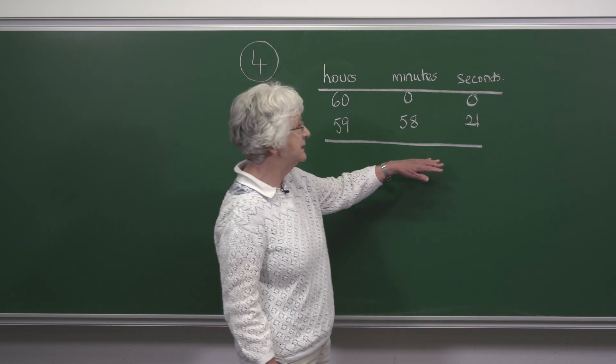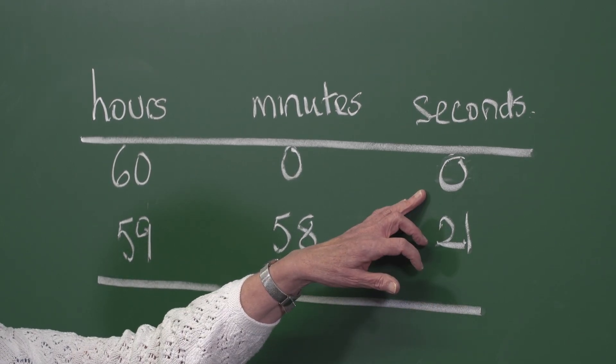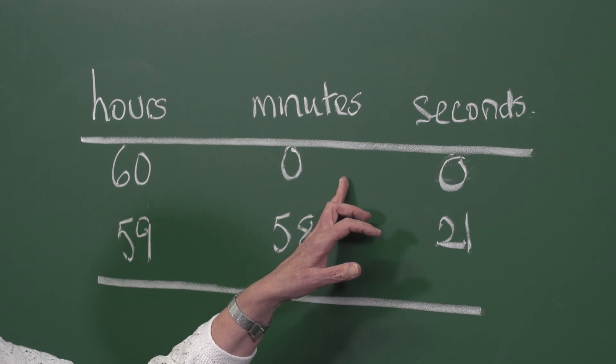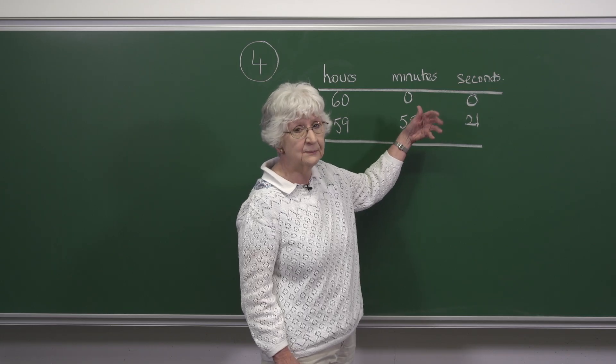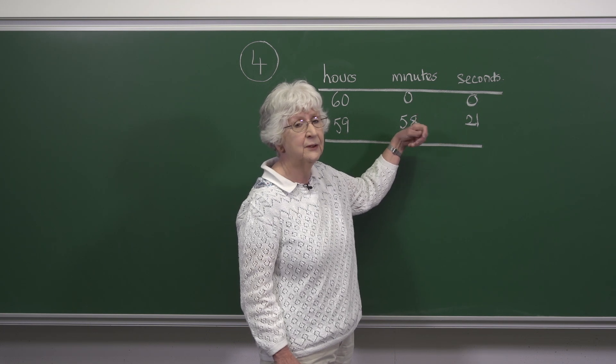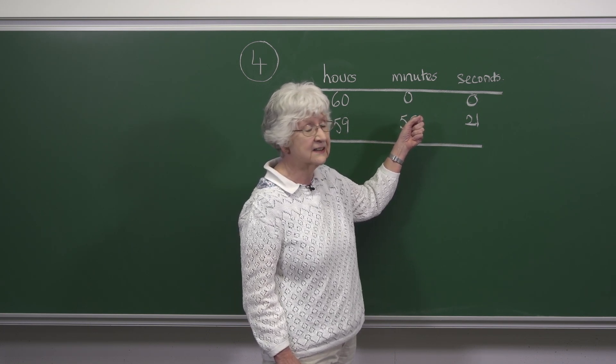When we try to do this we see we have a problem because we can't take 21 away from zero and we want to go next door. Now normally when we go next door we're using tens, but here we have to remember with minutes and seconds we're working in 60s.